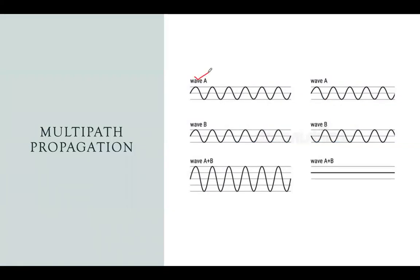When two signals reach the receiver and both are in phase — having the same phase shifts — they add together, resulting in a higher amplitude signal. This is called constructive interference. In some cases due to multipath propagation, one signal will be in phase while the other is out of phase. As a result, when these two signals are added, the net output is zero. This is the biggest disadvantage of multipath propagation.